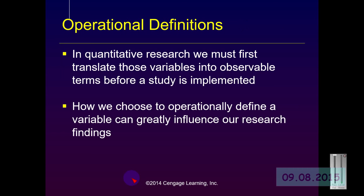When doing quantitative research, especially survey research, we want to carefully define what we mean by independent and dependent variables and translate those terms into something that is observable. If we choose a definition for a variable that does not actually define that variable, our research findings can be influenced or invalidated.